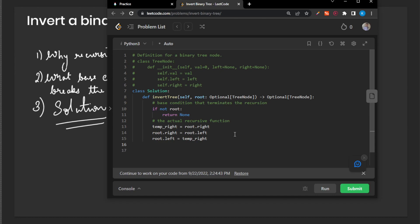After this, we perform the same invert tree function. This is where the recursion starts. We give self.invert tree on its root.left. And the same thing you need to do with root.right. Because in this case,